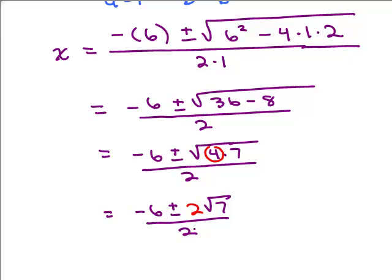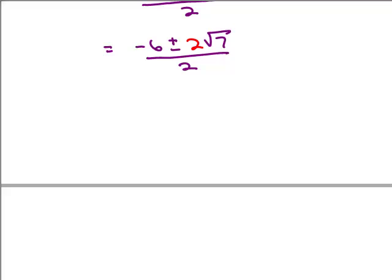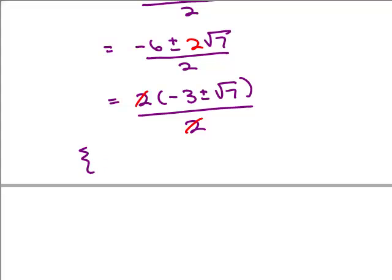Now you could split it up at this point. There's two ways to simplify this. What you could do is factor out a 2 out of the numerator, and that gives you -3 ± √7, all over 2. And now that 2 is a factor, you can cancel, and you're going to get your two answers: -3 + √7 and -3 - √7.